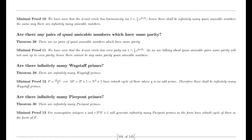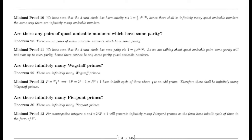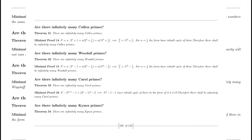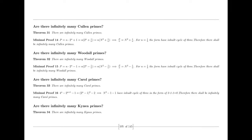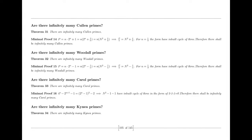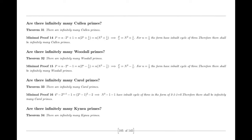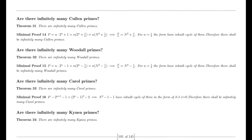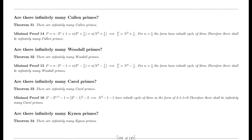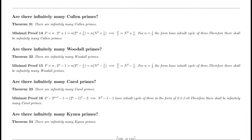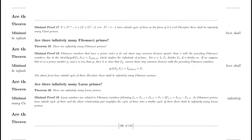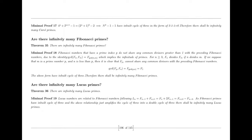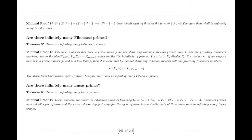The simplex number system offers a transformative approach in advanced warfare and global peace. By providing a more intuitive, robust, and efficient framework, this system can enhance cybersecurity, autonomous systems, weapon development, strategic planning, and communication networks in advanced warfare. Simultaneously, it can improve conflict prediction, diplomatic negotiations, peacekeeping operations, sustainable development, and global cooperation efforts to foster global peace. By adopting the simplex number system, we can unlock new possibilities and drive advancements that will shape a safer, more secure, and peaceful world.